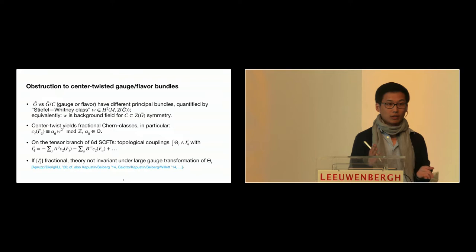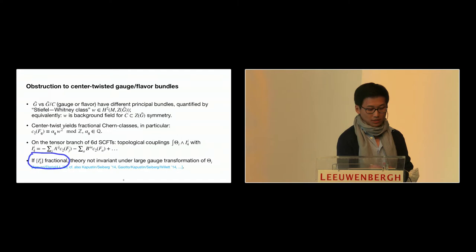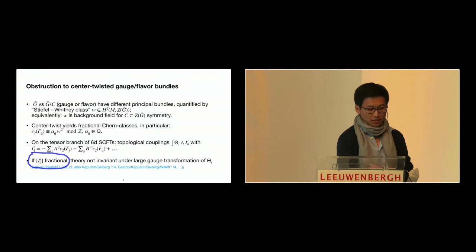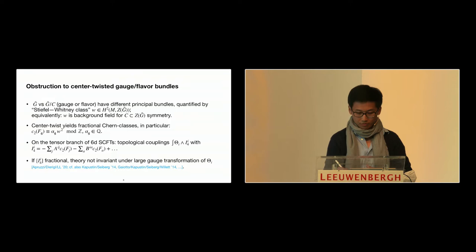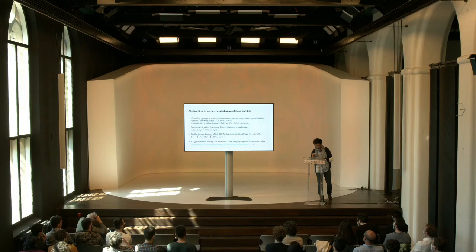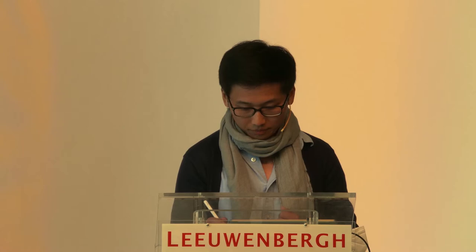In 6D, it's not really a 't Hooft anomaly — it's really an obstruction. It just says that whenever the cohomology class is fractional, there's something wrong with your theory. You have to make sure the twists you turn on keep that class integer. You can also apply the same logic to gravity theories where everything has to be gauged or broken. As Miriam will talk about on Wednesday, this also comes in handy when you talk about supergravity theories where you want to constrain the global form of the gauge group.